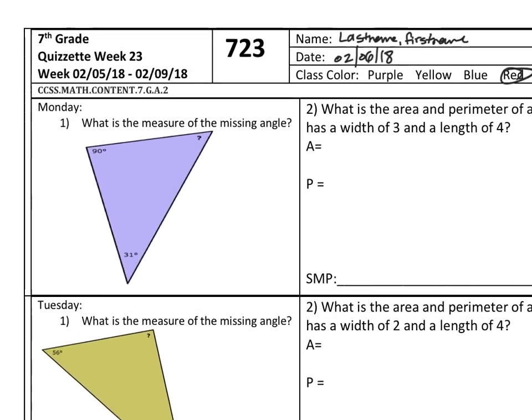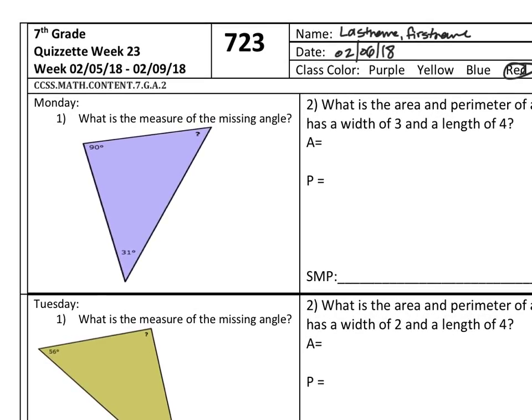So on number one, you're going to be asked, what is the measure of the missing angle? They're going to give you two angle measures, and there's going to be one angle measure that's missing. Some of you might remember that the angle measure of every triangle is 180 degrees. So every single triangle, even if it's a tiny one, the angle measures when they're added together all equal 180 degrees.